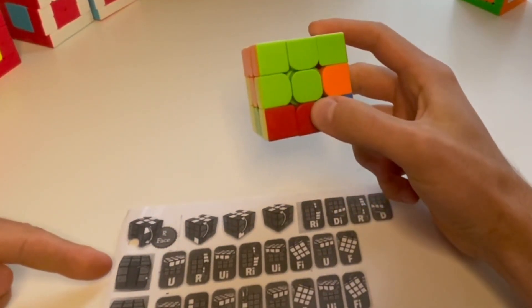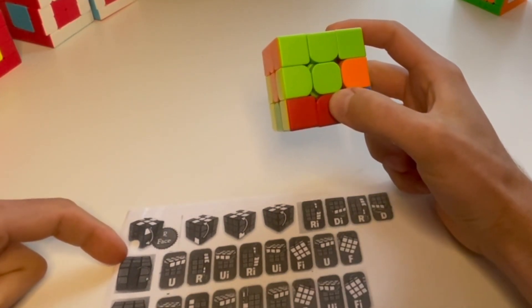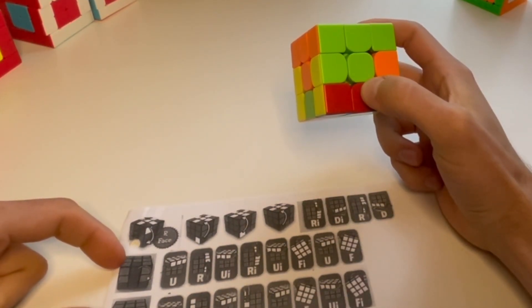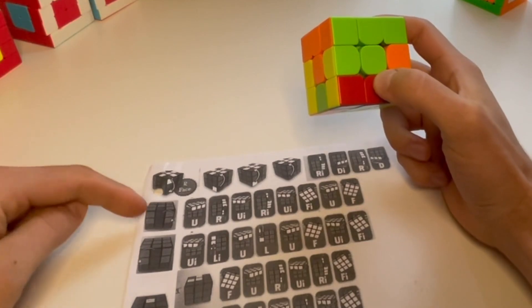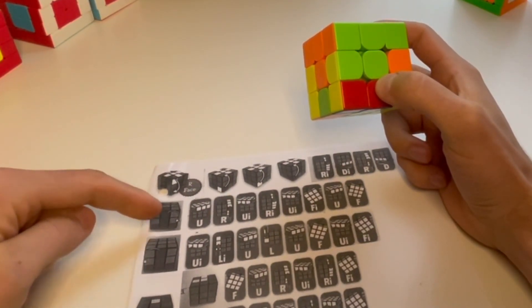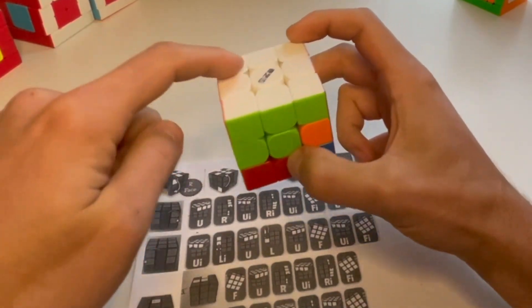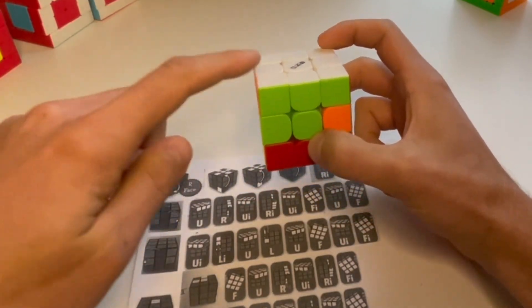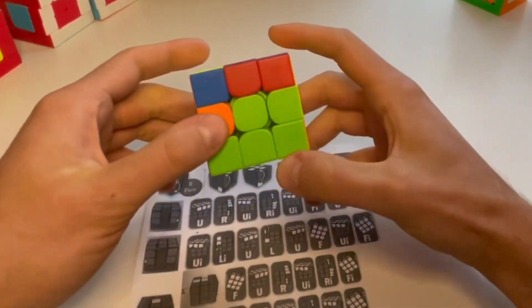So next we're going to look at this next part. You might want to make a note here if you've printed this out for yourself. These are for solving the middle layer. We've solved this, we're going to now flip it over so the yellow is on top.